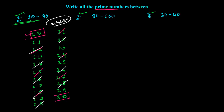Now cancel all those numbers divisible by 5, then 7, then 11, and so on — dividing by as many prime numbers as possible. For 5: 15, 20, and 25 get canceled. Note that 10 and 30 are boundary numbers and may be excluded since we need numbers between them.